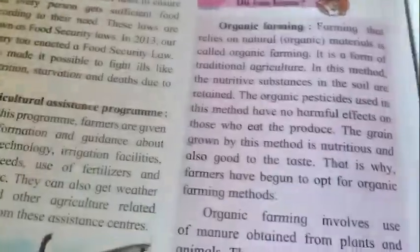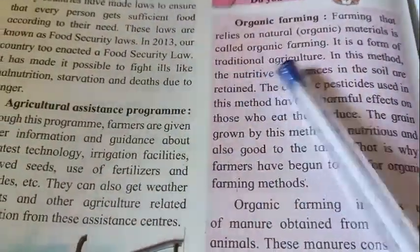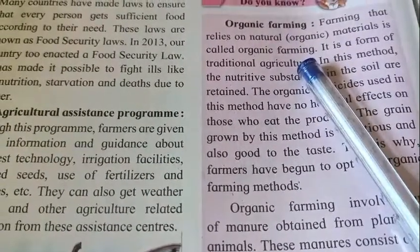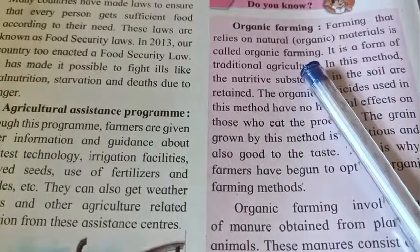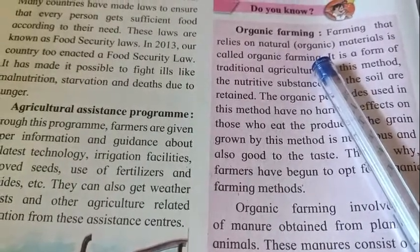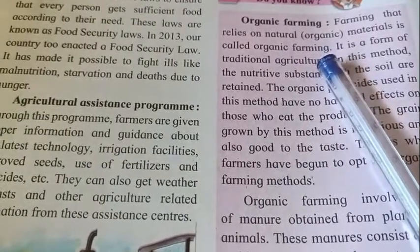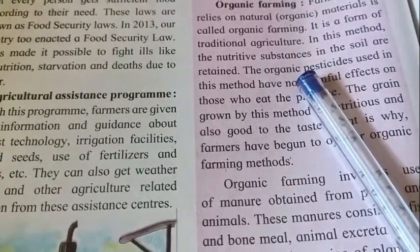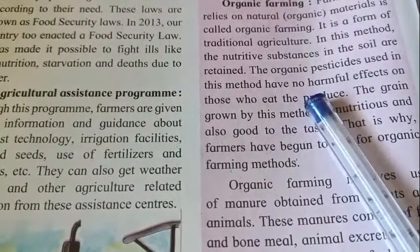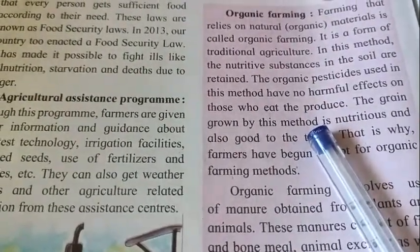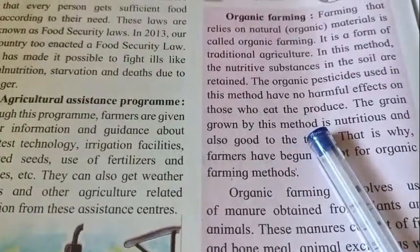The last and important point from this lesson is organic farming. Farming that relies on natural materials is called organic farming. As discussed in a previous video, fertilizers are of two types - natural and chemical. Organic farming uses natural fertilizers. It is a form of traditional agriculture in which the nutritive substances in the soil are maintained, and the organic pesticides used have no harmful effects on those who eat the produce.